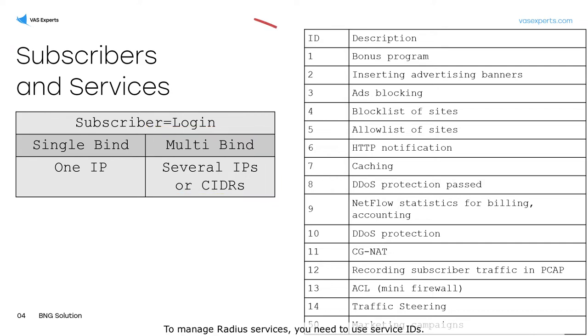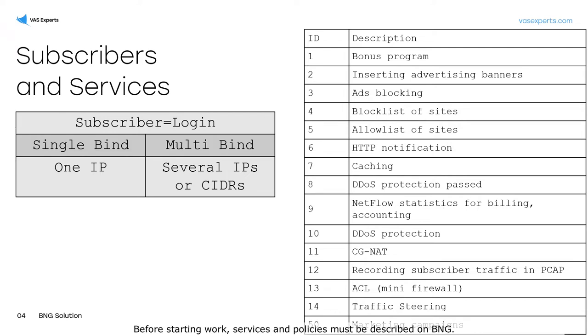To manage RADIUS services, you need to use service IDs. The required service identifier and profile name should be transmitted. Before starting work, services and policies must be described on BNG.